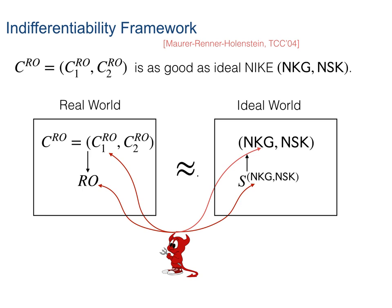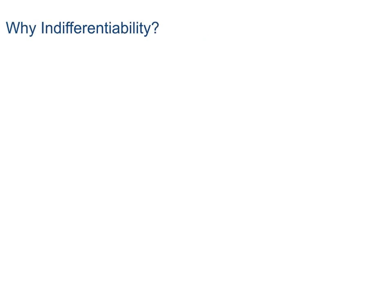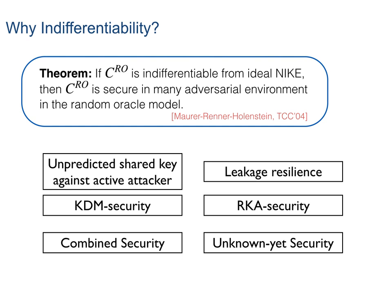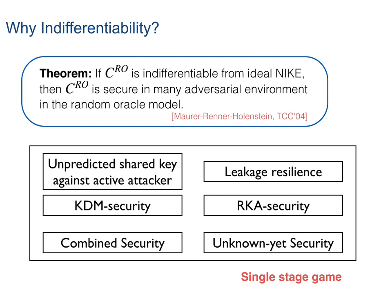One important thing to emphasize: in the indifferentiability framework, everything is under the adversary's control — the secret key, the randomness, the nonces, everything — and they can be chosen in any related fashion. The reason we choose indifferentiability is the following. By the composition theorem, if our construction is indifferentiable from the ideal KEM, then our construction is secure in many adversarial environments in the random oracle model. Those environments include shared-key security, unpredictable shared key against active attackers, leakage-resilient, KDM, RKA, and even combined security — meaning the security game can be both leakage-resilient and KDM. It also covers some as-yet-unknown security notions: as long as the security game can be represented as a single-stage game, the indifferentiability framework covers it.